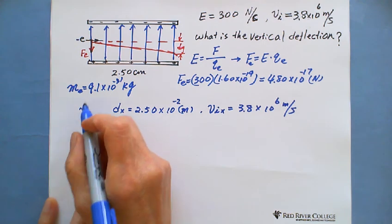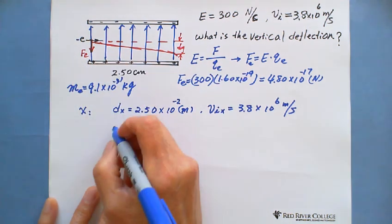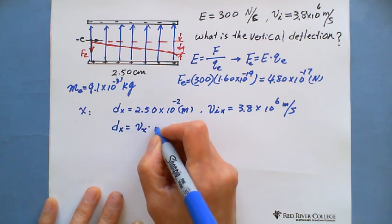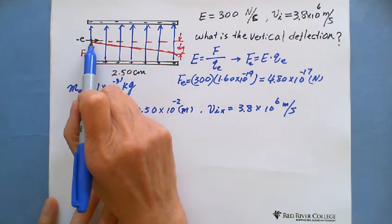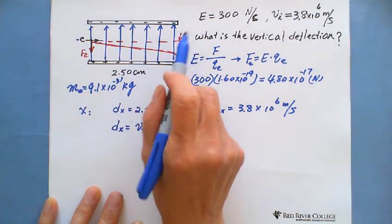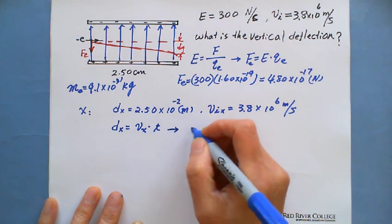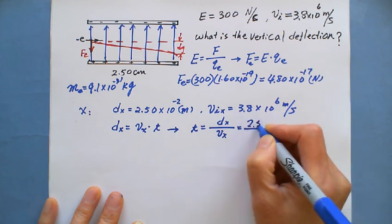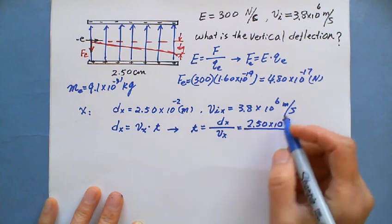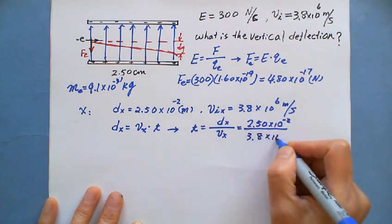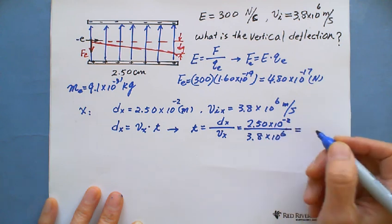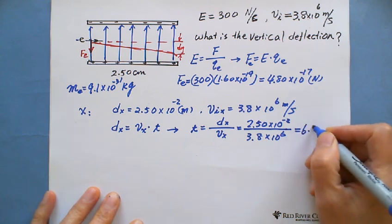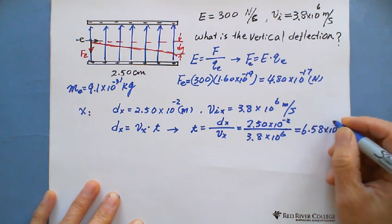And the initial velocity horizontal, that's why we label as vx equals 3.8 times 10 to the 6 meters per second. So the equation of horizontal, because it's uniform motion, that's why we have dx equals v initial velocity, which is vx times t, which is how long it takes the electron to exit the parallel plate. So we can find the time equal to dx over vx, which is 2.5 times 10 to the negative 2 meters divided by 3.8 times 10 to the 6 meters per second. Then we can calculate the time, it's 6.58 times 10 to the negative 9 seconds.